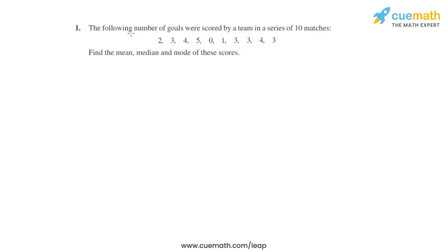Question number one of this exercise says that the following number of goals was scored by a team in a series of 10 matches. These are the scores. What we have to do is find the mean, median, and mode of these scores.